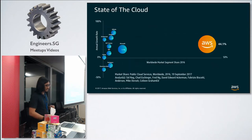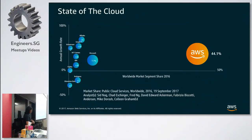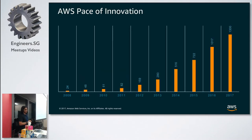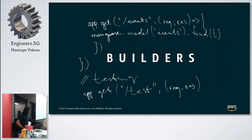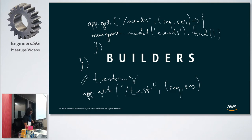Next I'm going to show you the state of the cloud — where AWS stands now. We currently have 44.1% market share and we are leading, with Microsoft as the second leader. This graph shows you the AWS pace of innovation. During re:Invent this year we saw how builders compose their applications, and we in AWS want to serve builders — we want them to have all the tools, the instruments, and the freedom to get data analytics.